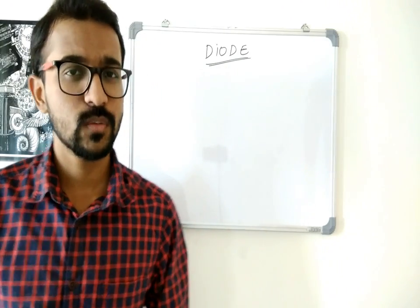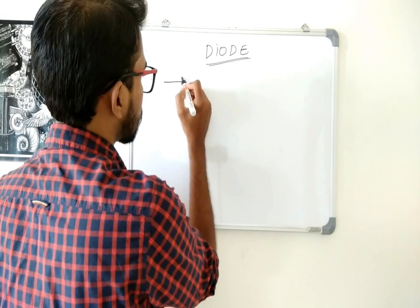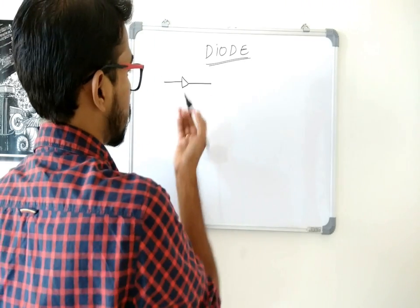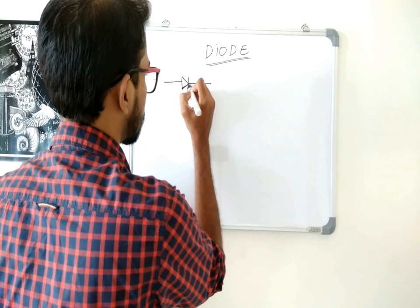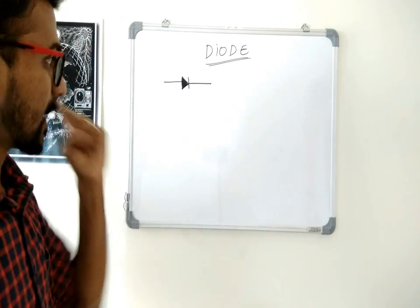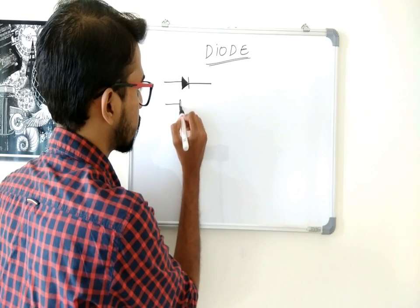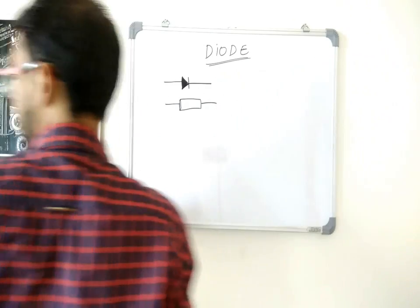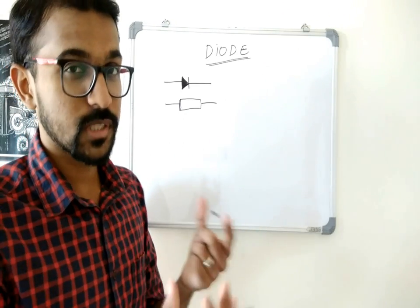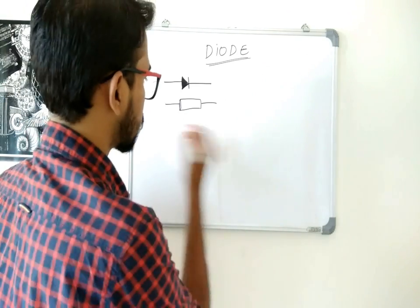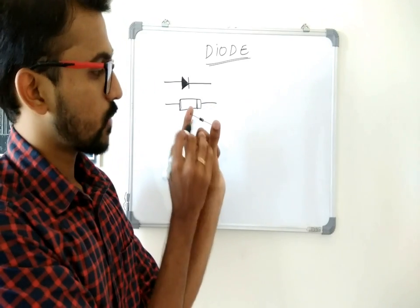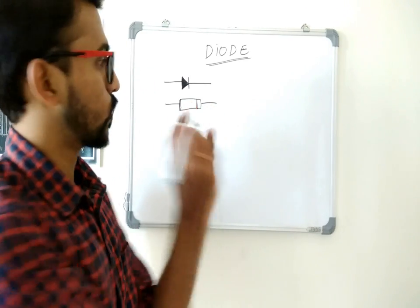So what is a diode? A diode is a two-terminal device which allows current to pass only in one direction, and even the symbol of a diode is represented in the same way — it's an arrow with a line. This is how a diode is represented, and a diode looks more like a cylinder. A diode looks more like a cylinder with a line on one side — this is a black device with a gray line on one side indicating the cathode.